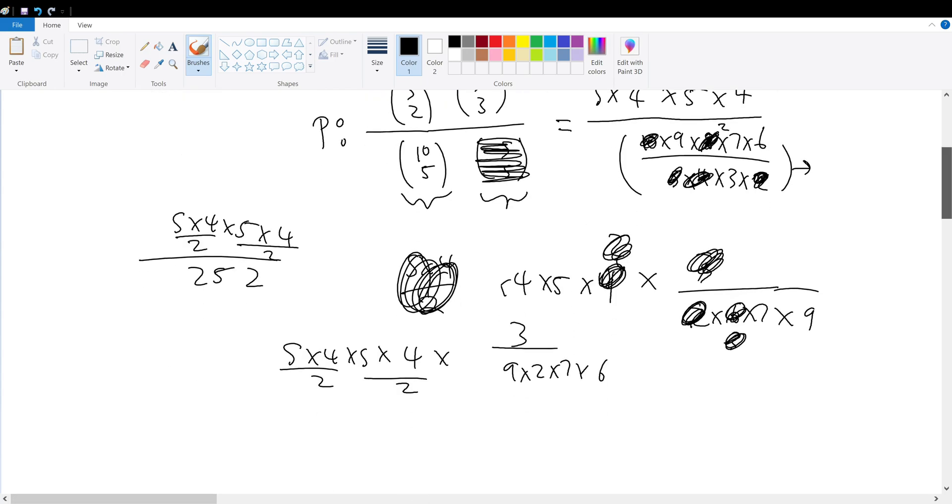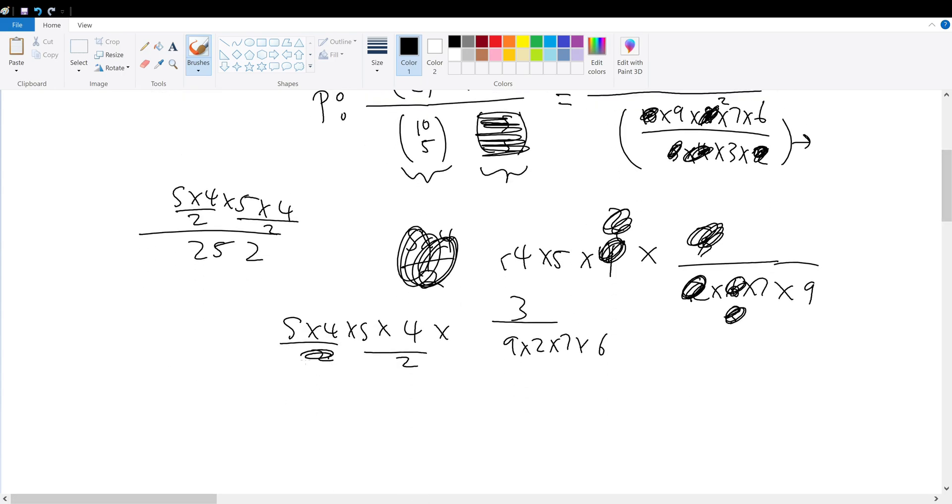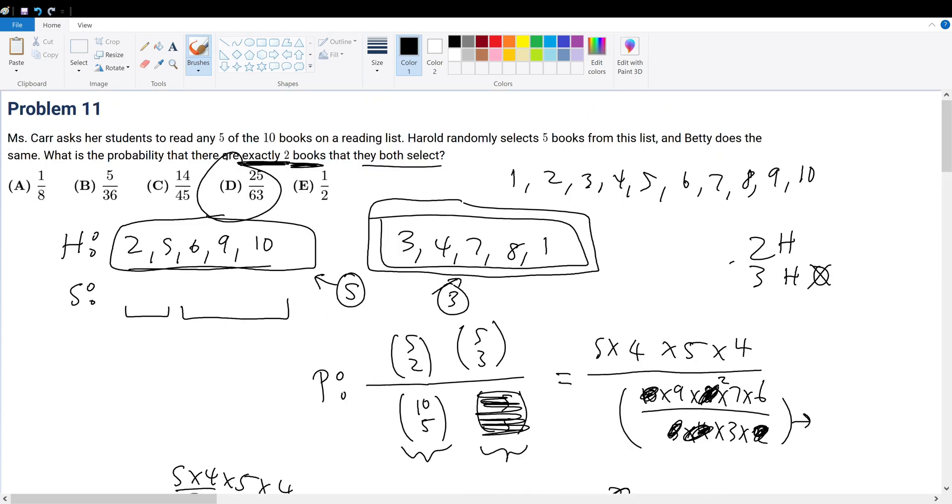So with this, now we should be able to solve it correctly. Because 2 times 2 is 4, cancels with this 4 right here. And then we know this and this and this gets cancelled into 2. And 2 and 4 gets cancelled into 2. And now the 2 and the 2 gets eliminated, so we're left with 25 over 63. There we go. That's the correct answer. So your final answer will be answer choice D. Thank you guys, bye.